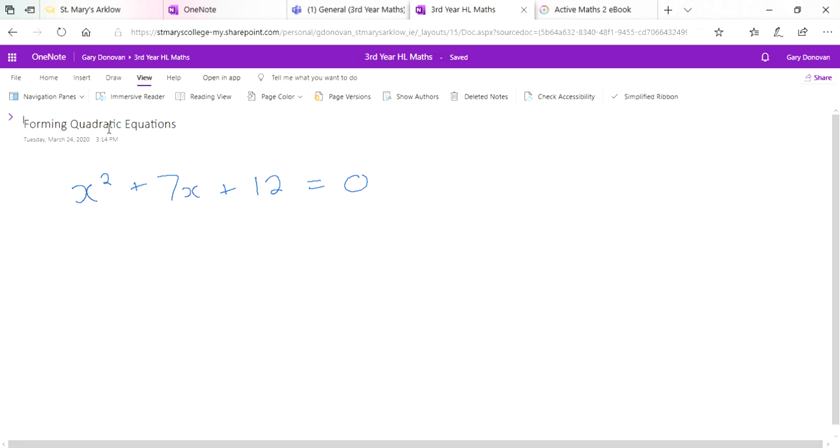Okay, so up until now we've been looking at solving quadratic equations. An example of this would be x squared plus 7x plus 12 equals 0. And what you've been asked to do so far is to solve it. By solving it, you find out what is the value of x.